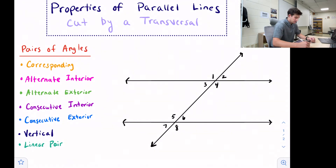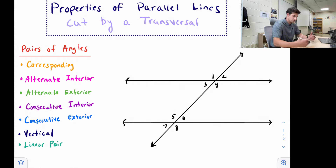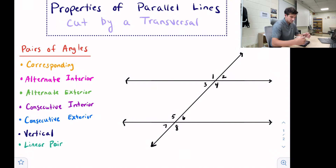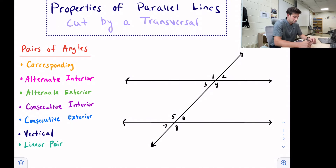Hello, everyone. In this video, we're going to talk about parallel lines and properties of those parallel lines when they're cut by a transversal. If you look on the left side of our screen, we have pairs of angles — these are the relationships we're going to discuss. We have seven relationships: corresponding, alternate interior, alternate exterior, consecutive interior, consecutive exterior, vertical, and linear pair. We'll run through the diagram on the right side, highlight where these angle relationships are located, and discuss whether these angles are congruent or supplementary.